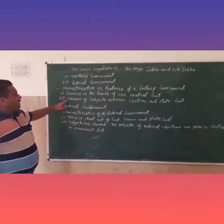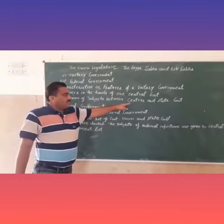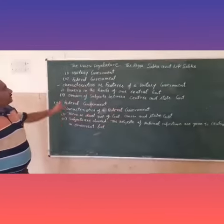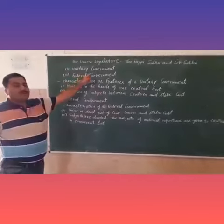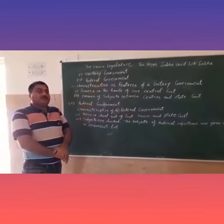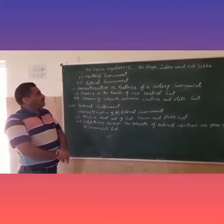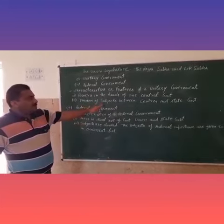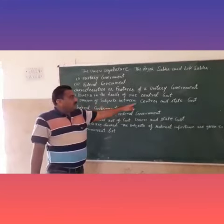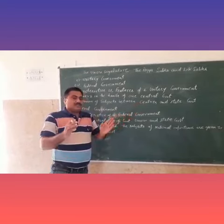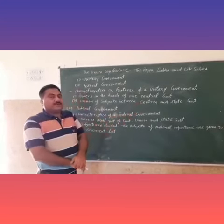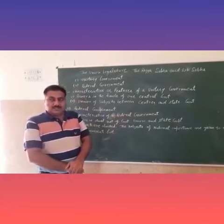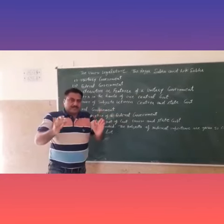The first point of the federal form of government is the division of subjects between the centre and the state government. In the federal form of government, there is a provision made for the division of subjects into the centre list and the state list. According to these subjects, both governments can make laws.